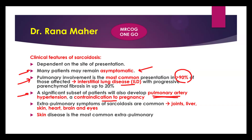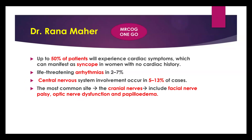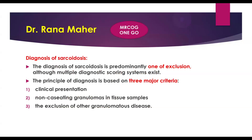Extra-pulmonary symptoms include the liver, skin, heart, brain, and eyes. Skin is the most common extra-pulmonary site. Around 50 percent of patients will experience cardiac symptoms like syncope and arrhythmia. In around 2 to 7 percent, central nervous system involvement occurs, especially the cranial nerves, presenting with facial nerve palsy or optic nerve dysfunction.